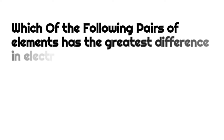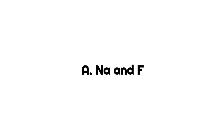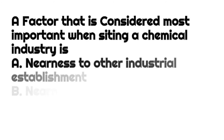Which of the following pairs of elements has the greatest difference in electronegativity? a) sodium and fluorine, b) sodium and chlorine, c) sodium and bromine, d) sodium and iodine. Our answer is a) sodium and fluorine, because fluorine is the most electronegative element.